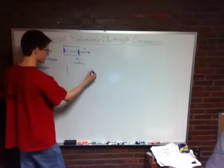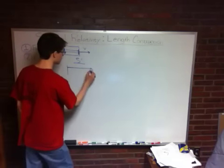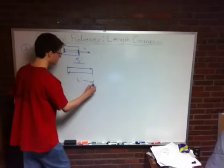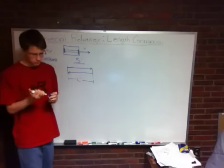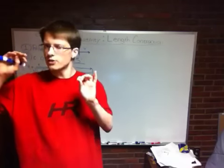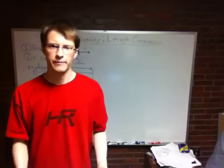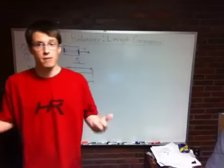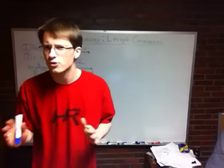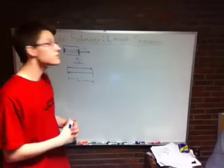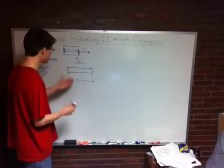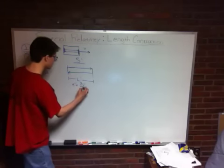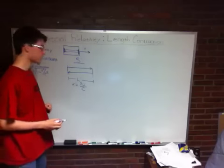In the S-prime frame, I'm standing inside the train and watching these light beams go back and forth in front of me. We have the two mirrors, and it's a very straightforward interaction: the photon comes to the front, and then it bounces back to the back. We're going to call the distance between the two mirrors L-prime. The time it takes to do this is called T-prime, and it's equal to the distance traveled over the velocity. The distance traveled is 2L-prime, and the velocity of a photon is always C, so T-prime equals 2L-prime over C.